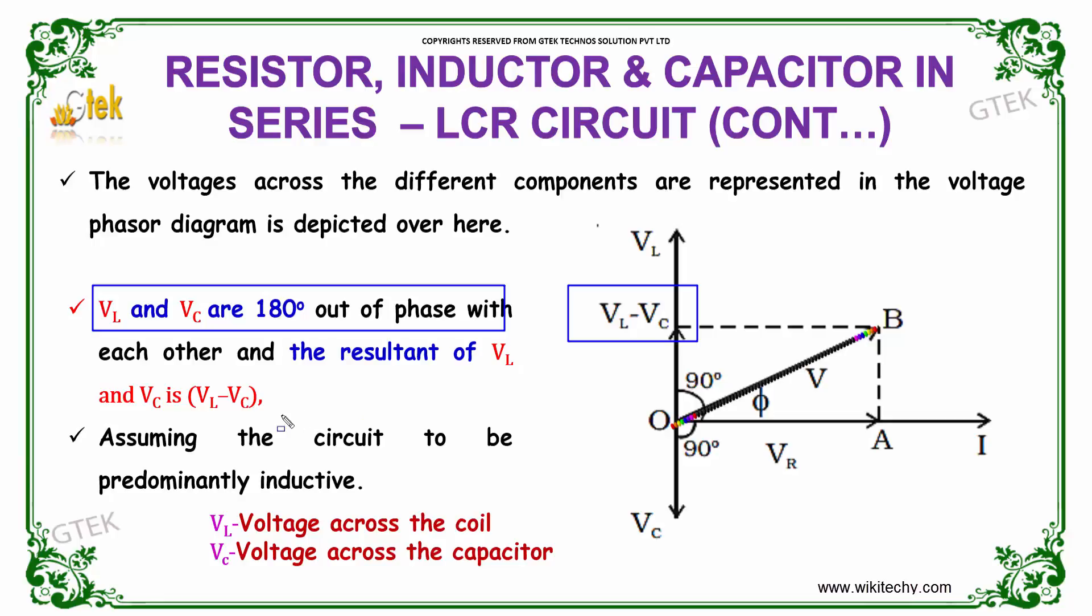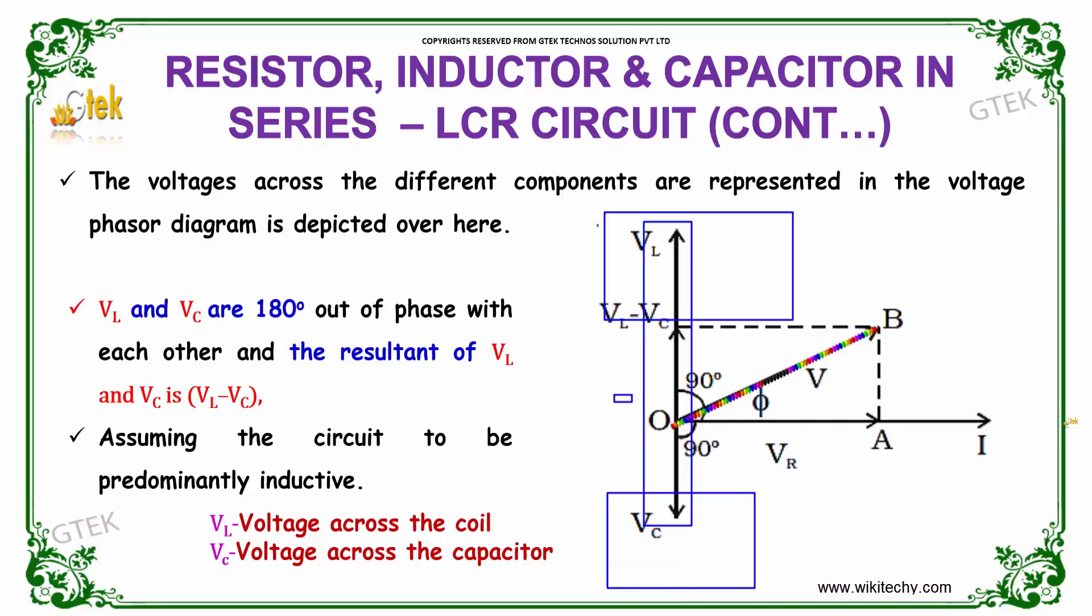And the resultant of VL and VC is VL minus VC, assuming the circuit is predominantly inductive. So you got your VL here and VC here, 180 degree difference, and VR is in phase.